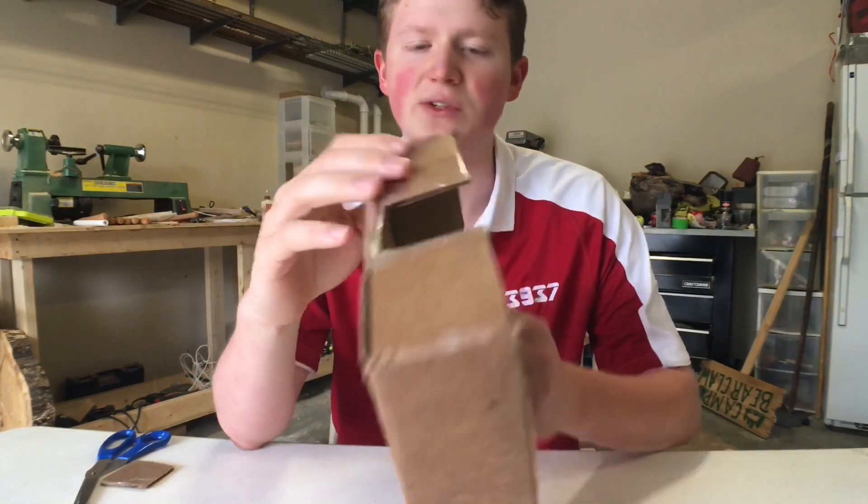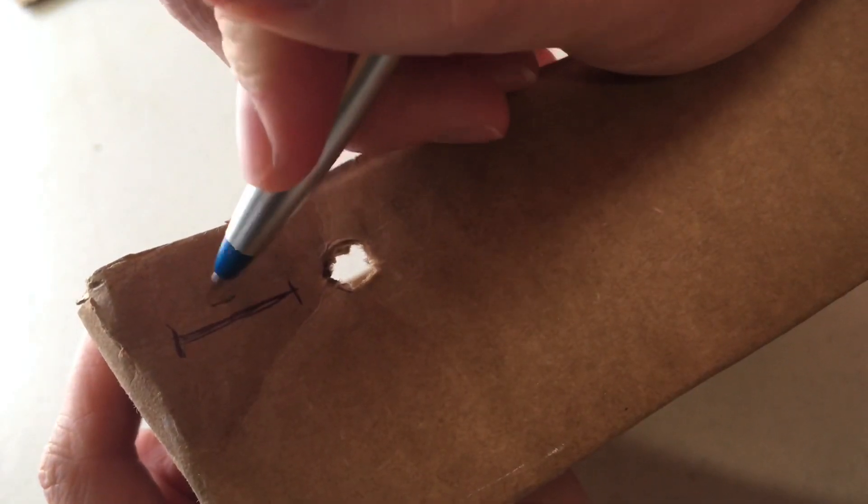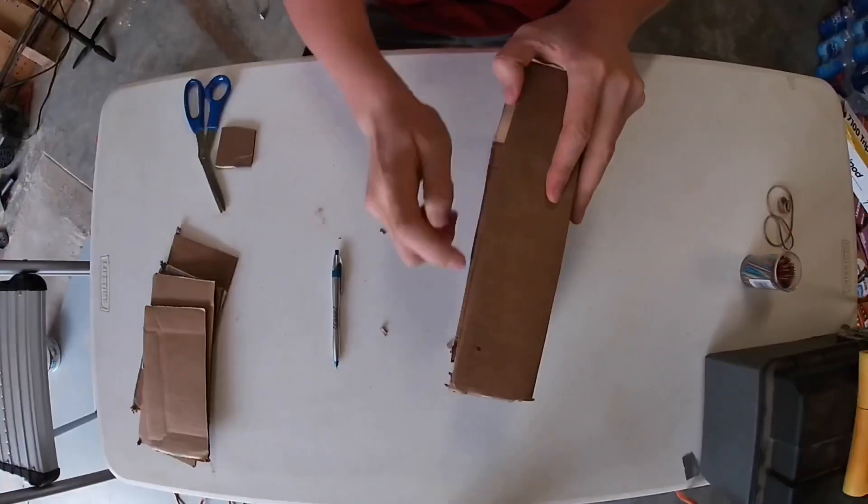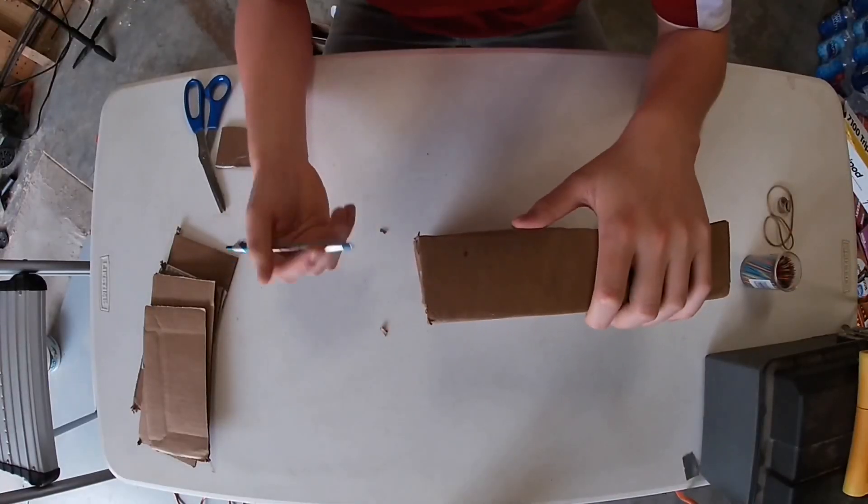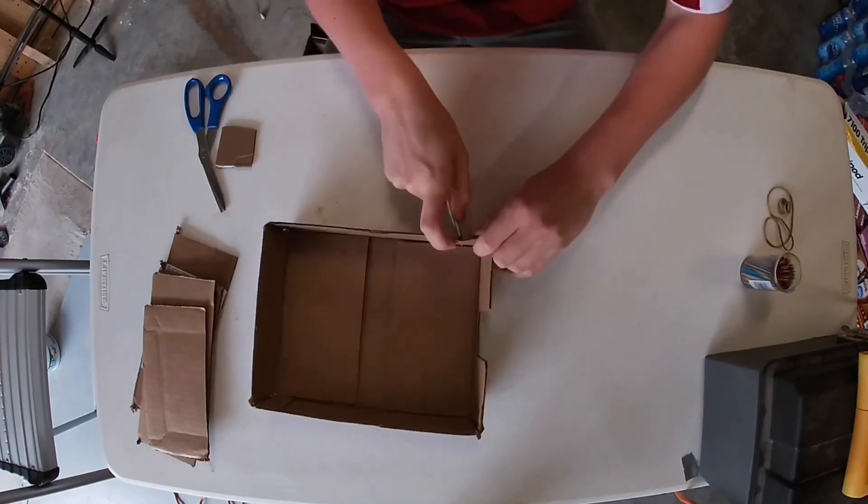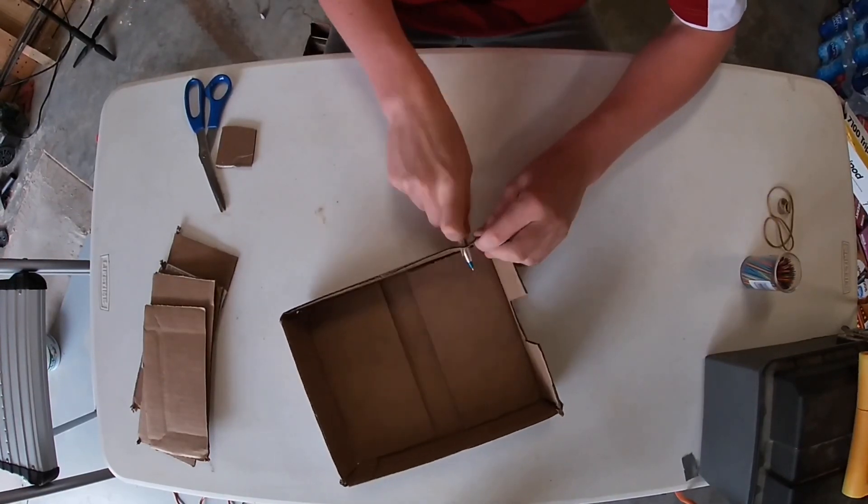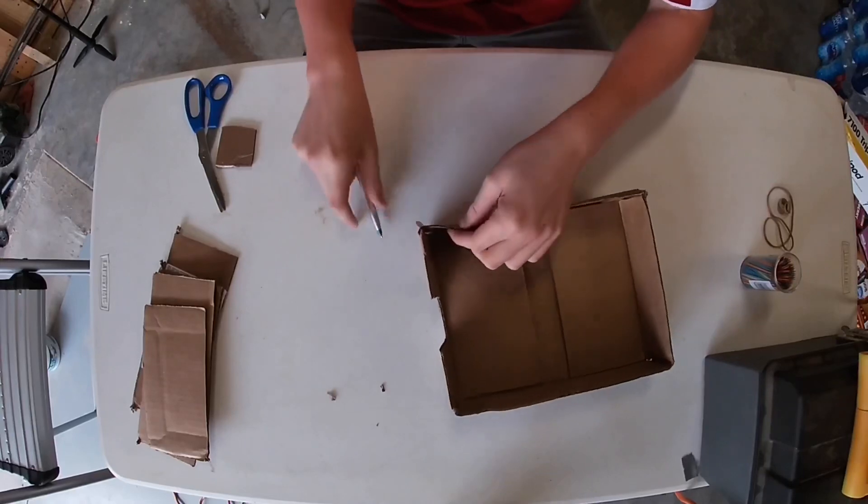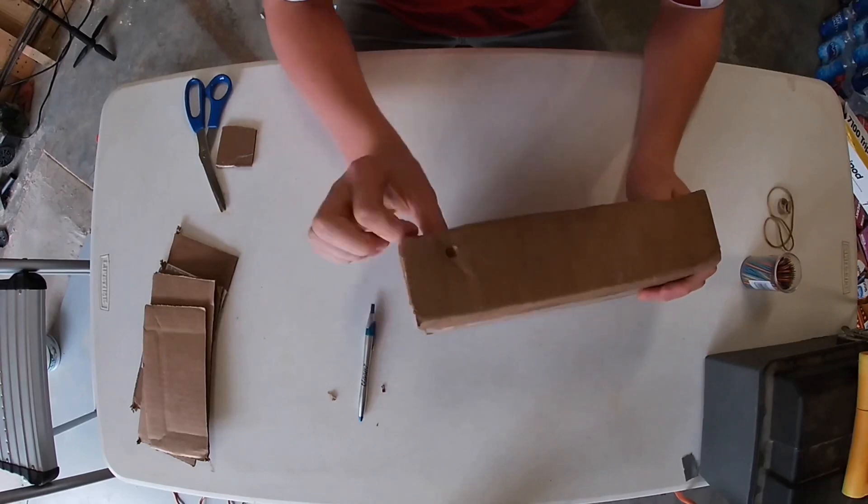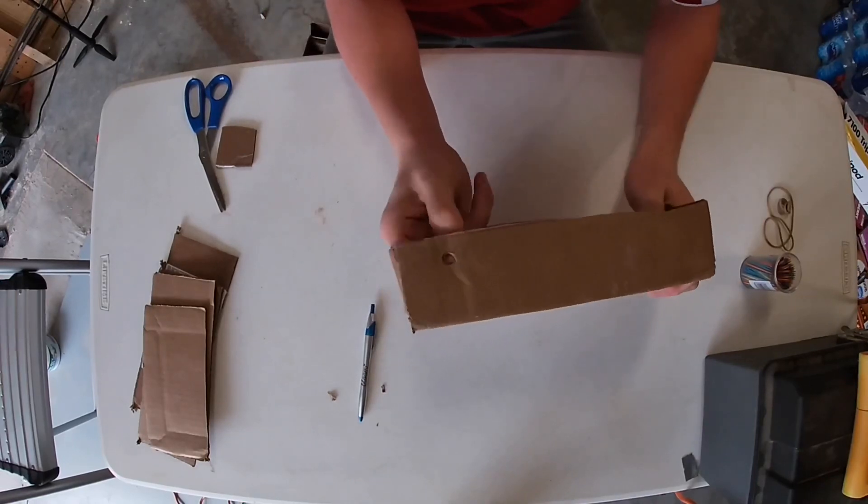What you need to do now is mark a hole that's about an inch from the back of the box where your cutout is, about half an inch from the top, and make sure you mark it on both sides. Once you have your markings made, take a pen or pencil and poke a hole all the way through. Once you have your holes made, try to clear them out a little bit and get that excess cardboard out.